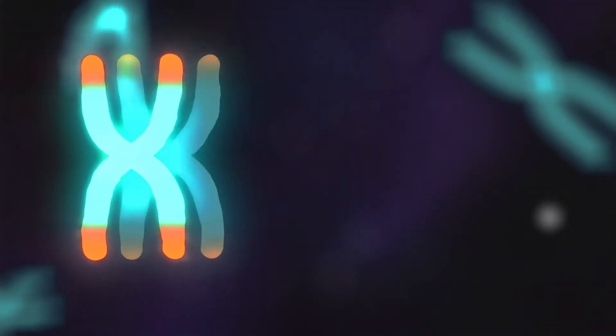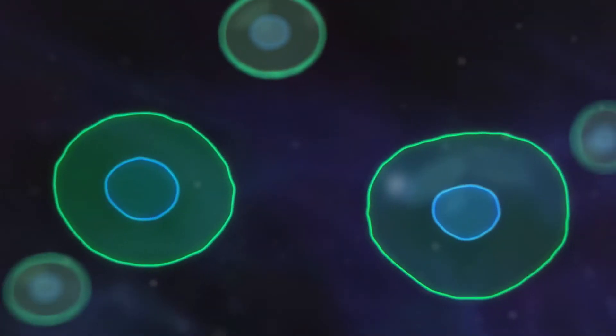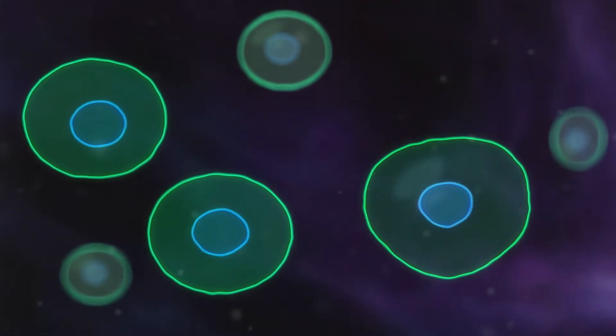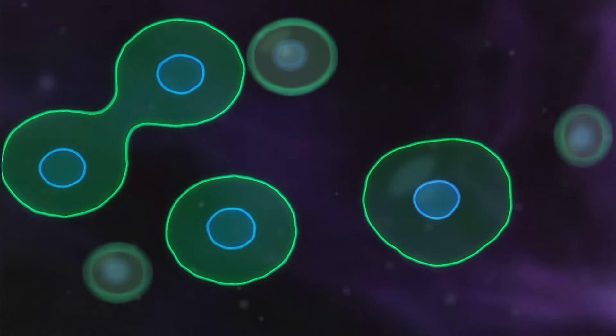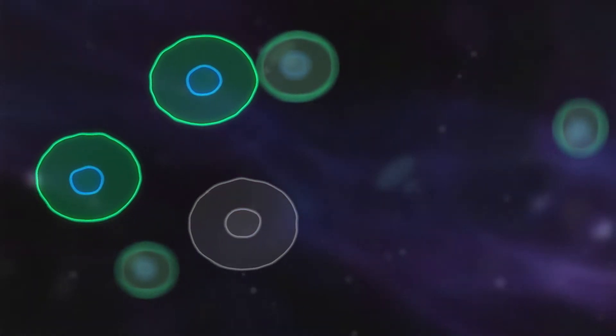Each time our cells replicate, their telomeres shorten like a candle slowly burning down. But when telomeres are way too short, it triggers our body's DNA damage response, signaling cells to stop dividing or die. It's partially through this process that our bodies age.